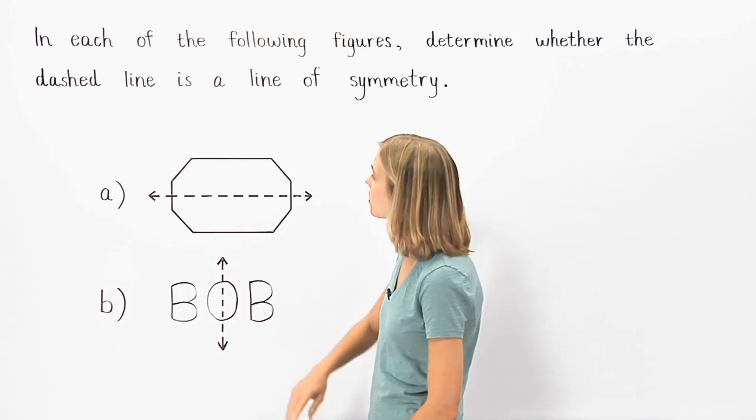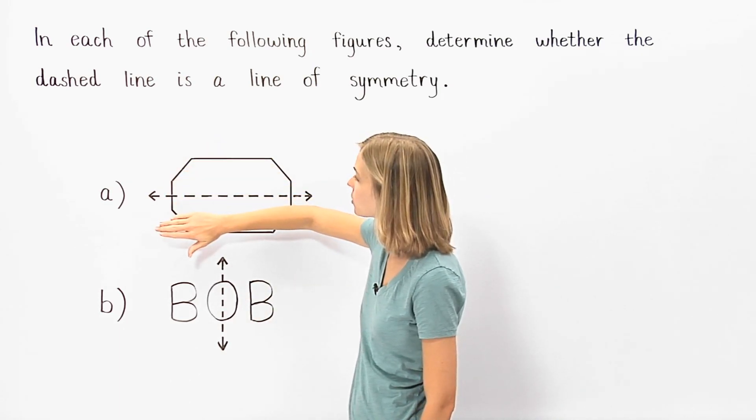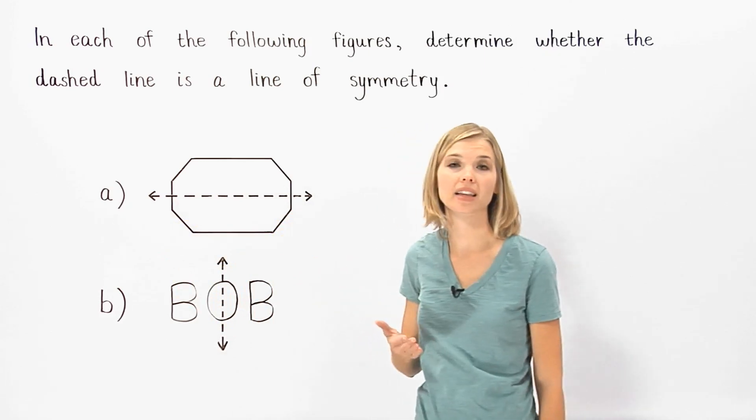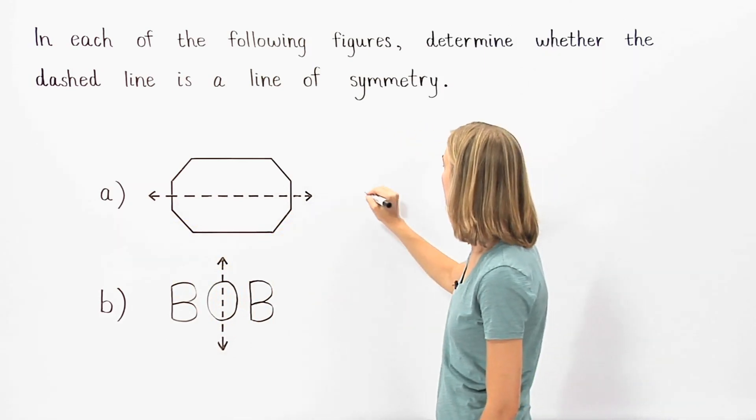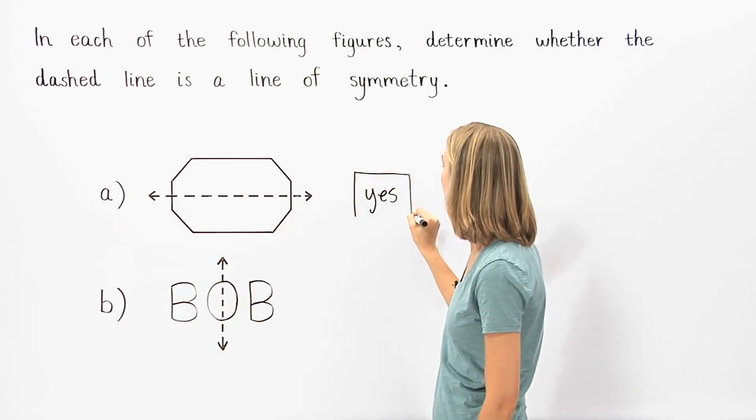So in part A, notice that if we flip the top side of the figure over the line of symmetry, it matches up exactly with the other side. Therefore, our answer is yes. The dashed line is a line of symmetry.